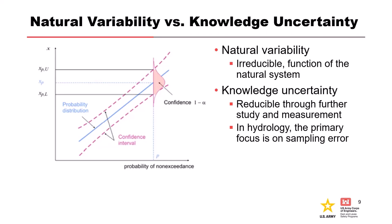Credible intervals represent our knowledge uncertainty. When a flood occurs, the size is not exactly known. If we take a vertical slice across the intervals, we see that knowledge uncertainty has a distribution. Knowledge uncertainty is a form of sampling error, and sampling error is a function of record length. In a flow volume or stage frequency analysis, the longer the record, the less sampling error we have, decreasing our knowledge uncertainty. If you had perfect knowledge — all samples from the entire population — you would know exactly what it is, and sampling error is the difference between our sample and the population.